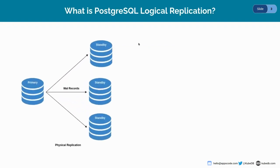In PostgreSQL, physical replication methods are used to maintain a full copy of entire data of a single cluster. The source machine is called the primary and the destination is called the standby. The primary server is in continuous sync with the standby by sending the WAL records. All servers should be running the same Postgres version and the entire database is copied. But what if someone doesn't want to replicate the whole database, rather wants to replicate a set of tables which are in different databases on different servers, or where the servers are running different Postgres versions, which is not possible using physical replication.